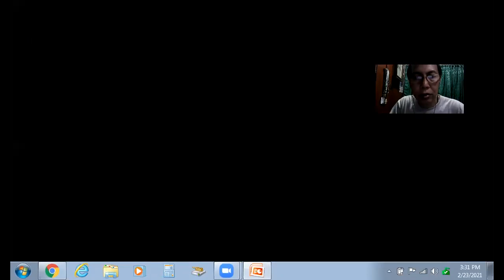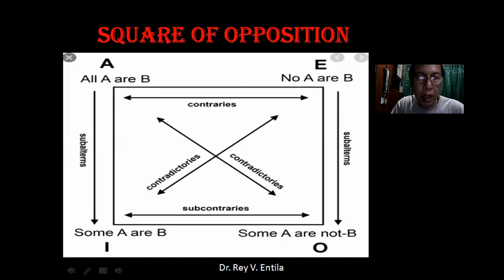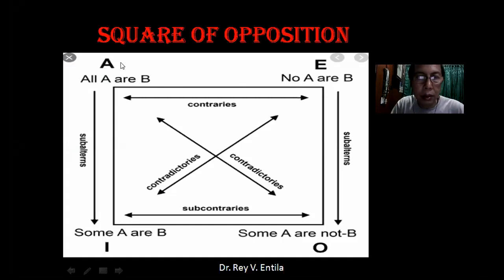As you can see, we have the square here, and you can see the different abbreviations: A, E, I, and O. What is A? A is the universal affirmative. A and I recall the vowels of the Latin term 'affirmo' — meaning 'I affirm, I concur.' So A is the universal affirmative.